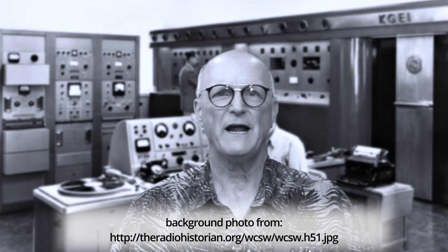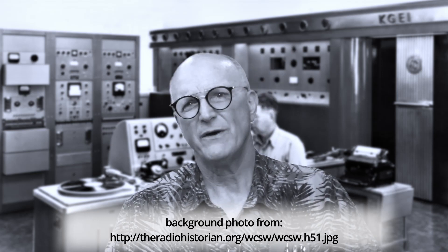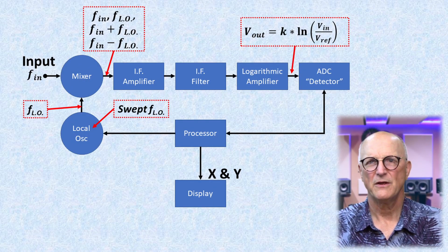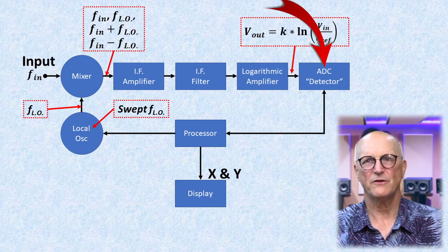So what is different about how it was done and how it is being done today? Well, in place of the analog-based detector, we have an analog-to-digital converter which samples the voltage of the IF signal. The processor is in direct control of the frequency of the local oscillator and the operation of the analog-to-digital converter or detector.